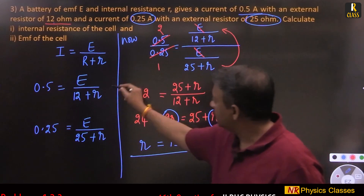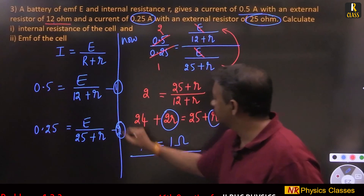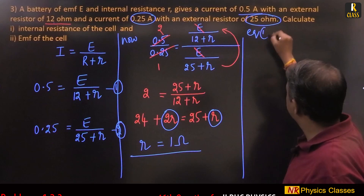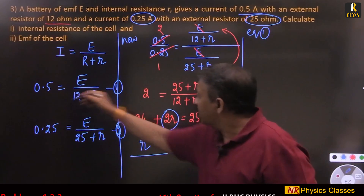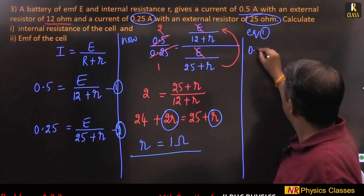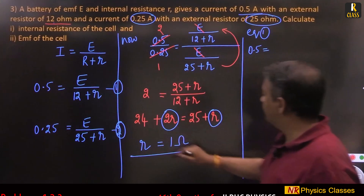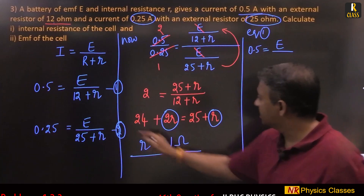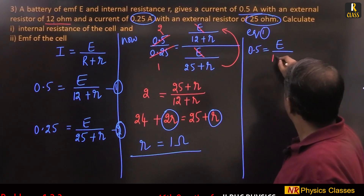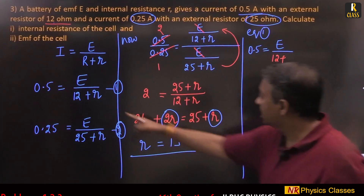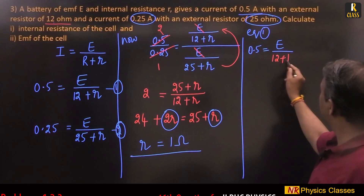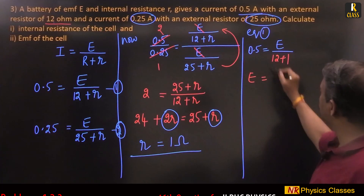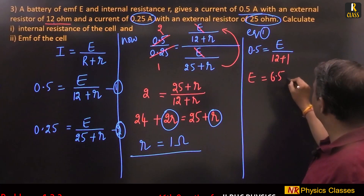Substitute r = 1 into equation 1: 0.5 = e / (12 + 1) = e / 13. Therefore e = 0.5 × 13 = 6.5 volt. So the internal resistance is 1 ohm and the emf is 6.5 volt. High school mathematics with circuits!